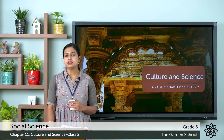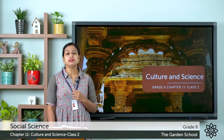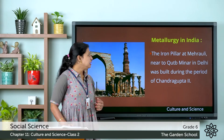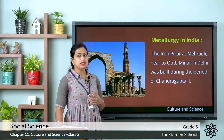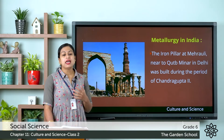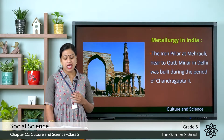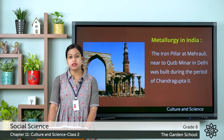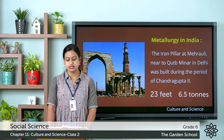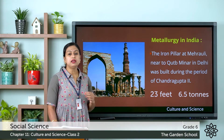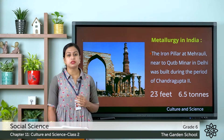During this ancient period, many buildings were constructed which you can see even today. For example, the iron pillar at Mehrauli near Qutub Minar in Delhi. It is one of the famous examples of metal technology of ancient India. The total height of this pillar is 23 feet and it weighs around 6.5 tons. This pillar is believed to have been constructed during the period of Chandragupta II.